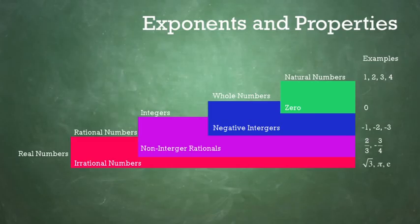The set of integers could be further subdivided into the set of negative integers and the set of whole numbers. The negative integers are minus 1, minus 2, minus 3, etc. And the whole numbers start from 0, 1, 2, 3.